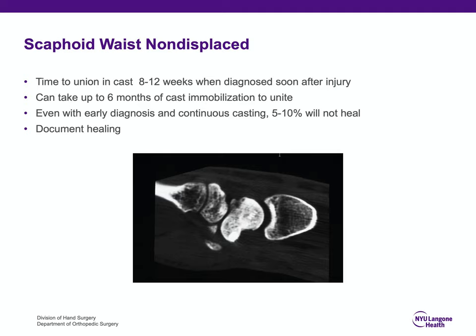Before telling the patient they no longer need to be in a cast and can return to all activities, you must document healing. Sometimes we see patients who had a scaphoid fracture, had a cast on for a short period of time, and then a year later were in pain with a scaphoid non-union because of lack of proper immobilization and no documentation of healing when the cast was removed.